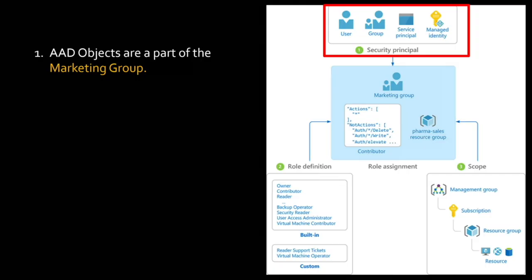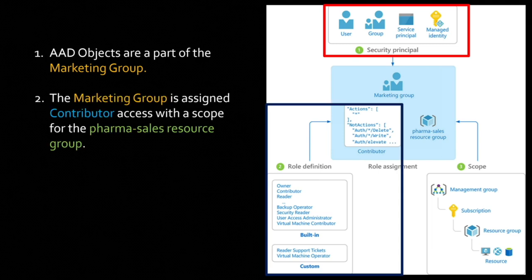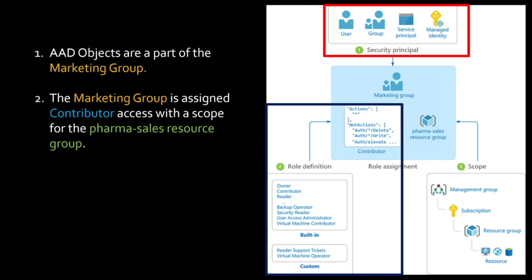Here's an example of applying RBAC: the marketing group, which contains several identities, is assigned contributor access with a scope for the pharma sales resource group. With contributor access, they get full permissions to manage everything without adding new RBAC roles — so they have full access to all resources within the resource group, but they cannot assign RBAC roles.